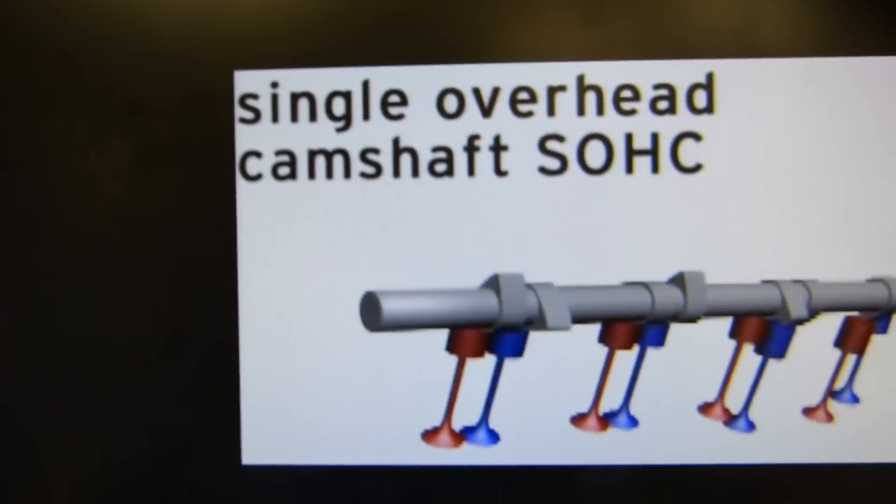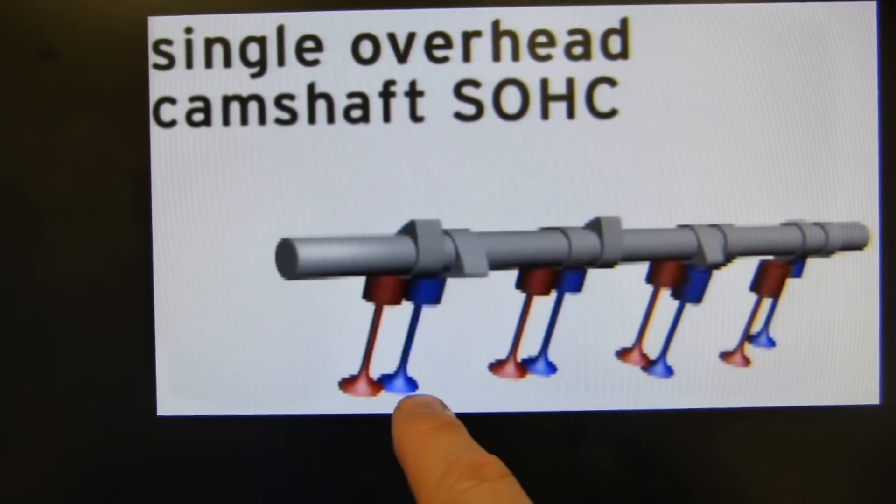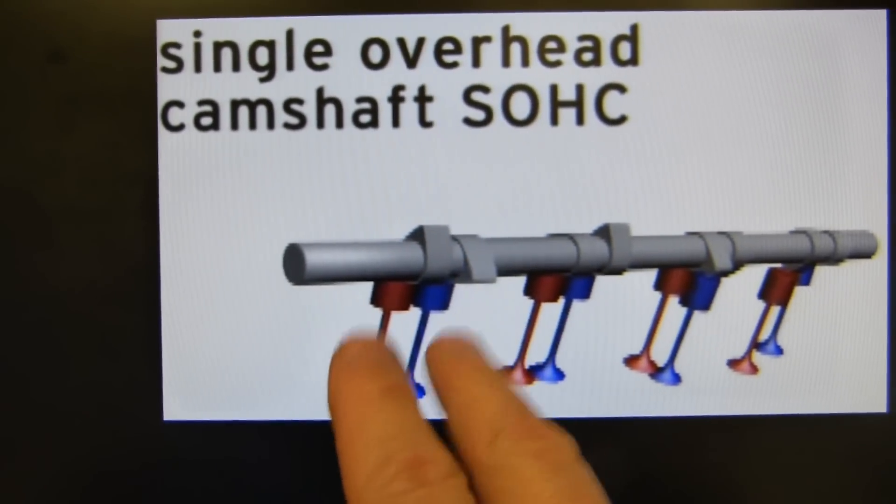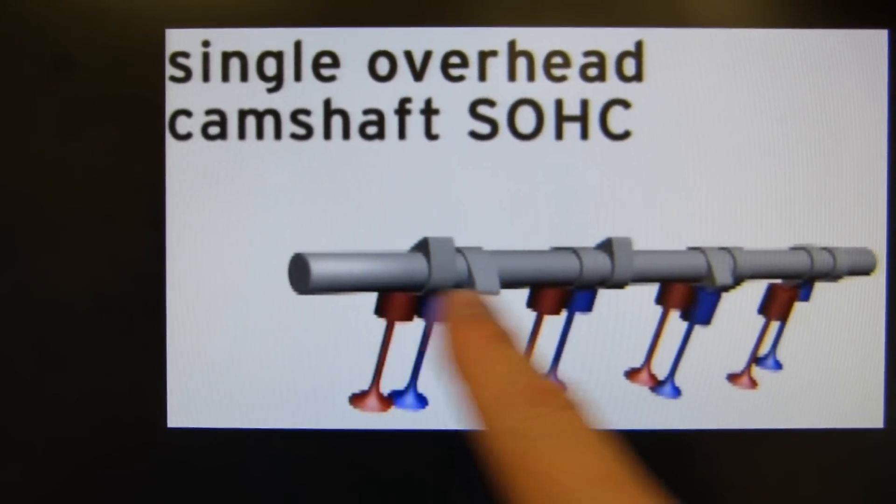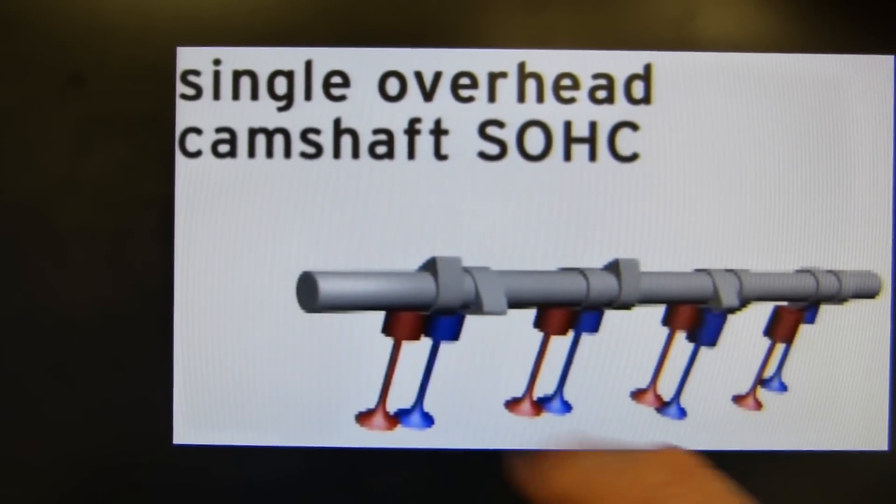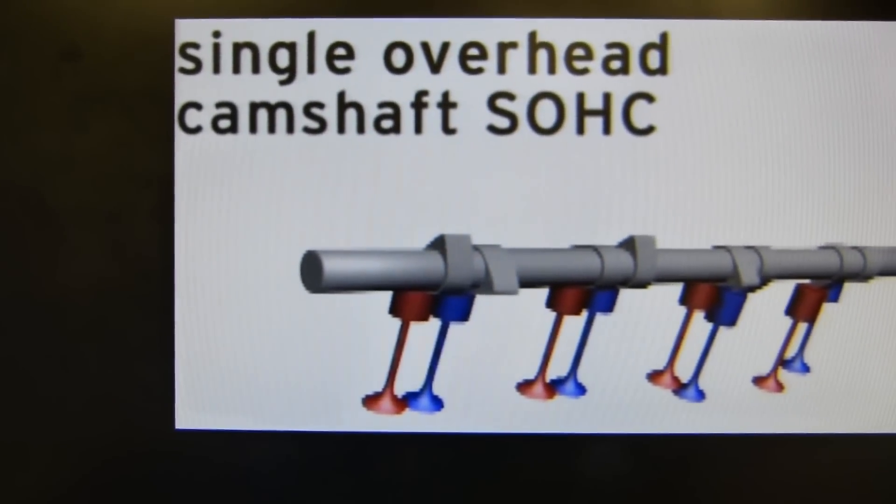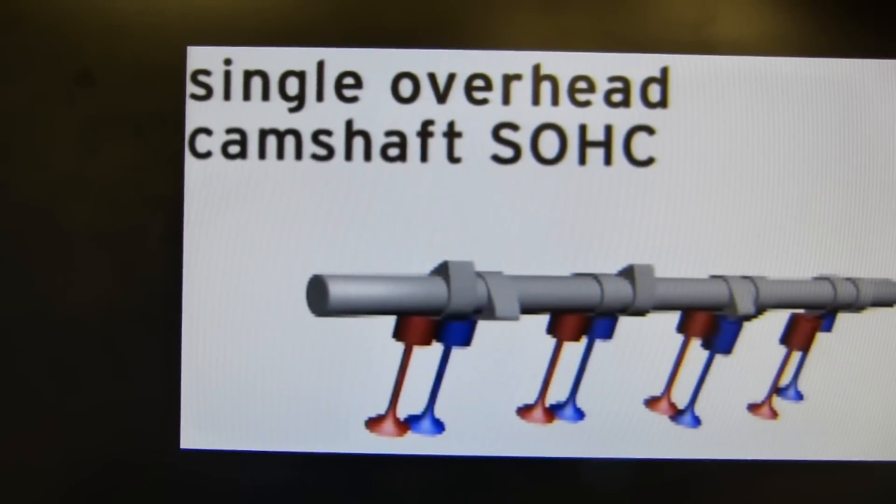On a purely single overhead cam design, this is a schematic. Blue for intake, red for exhaust—it doesn't really matter. You can see that these are side by side. And one camshaft, those would be the cams, those bumps. Those cams are driving the exhaust and the intake, alternating them at specified intervals.